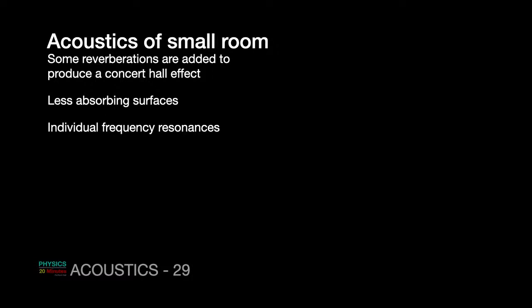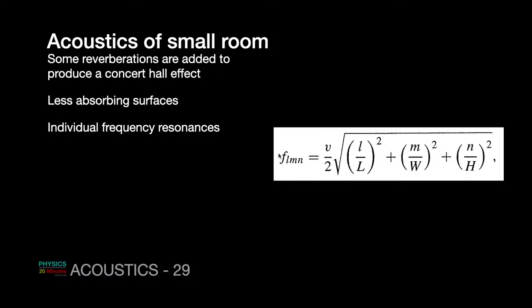Consider a room closed on all directions — it will have resonances along the x, y, and z axes. These resonances are an extension of the formula we studied earlier. For a tube closed at both ends, remember the resonant frequencies are similar to those of a string tied at both ends, which has the formula f = n × (V / 2L) for integer n.